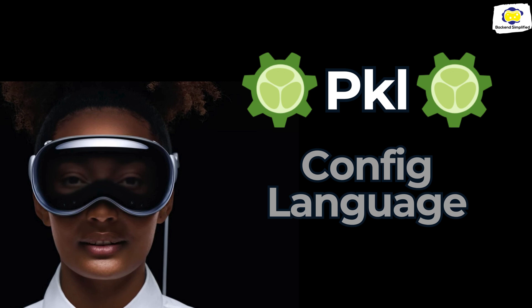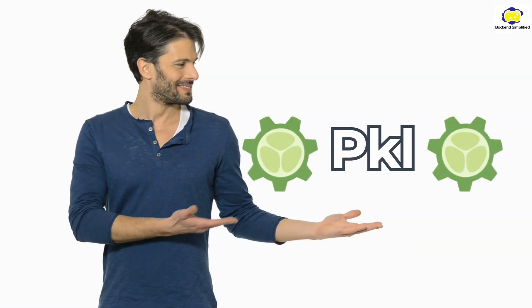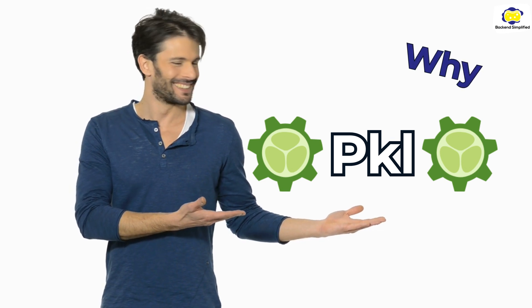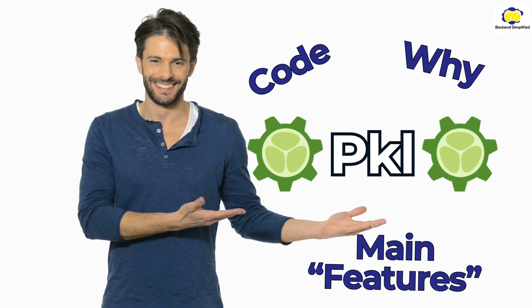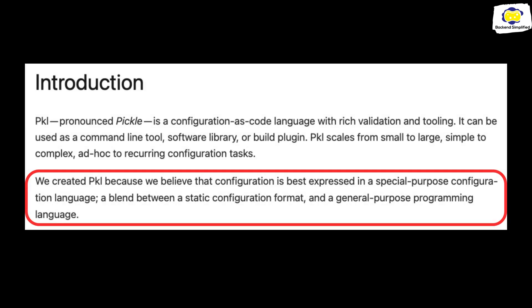Until now, the company used it internally. In this video, we'll cover why this language is required, see some Pickle code, and cover the main features of Pickle. Pickle claims in their documentation that they created Pickle because configuration is best expressed in a special-purpose configuration language — a blend between a static configuration format and a general-purpose programming language.